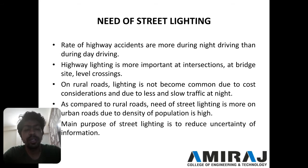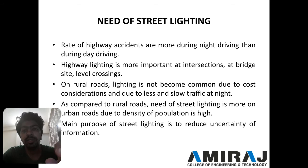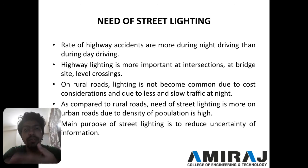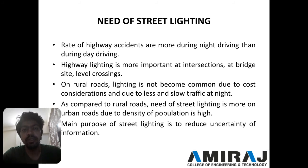The main purpose of street lighting is to reduce the uncertainty of information. If a user is going on a highway from one place to another and wants information about which direction to go, they need that information. It can be provided by sign boards or by providing indications whether he needs to go left or right. To view these sign boards, we need street lights.